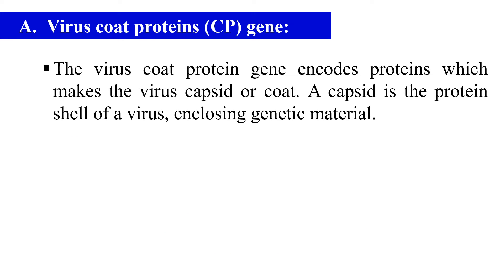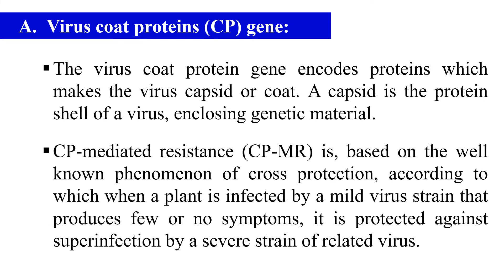First, virus coat protein gene. This is the gene which encodes the protein that ultimately makes the virus coat or capsid. As you know, the virus capsid is a protein shell of the virus that encloses its genetic material. The basic principle is that this coat protein will give cross-protection against the wild virus. The phenomenon is based on cross-protection, according to which when a plant is infected by a mild or weak virus, it will not produce any symptom but it protects against super-infection caused by the severe virus.